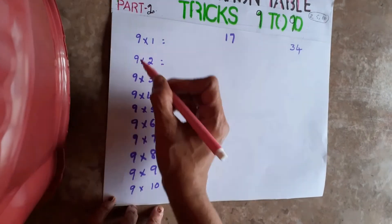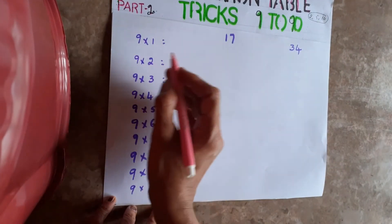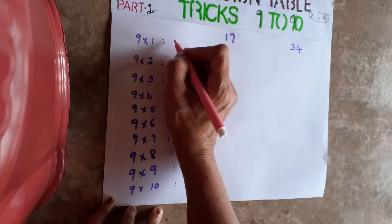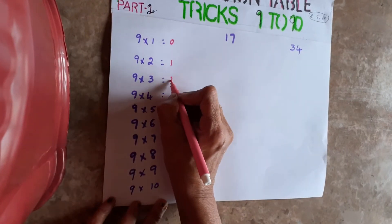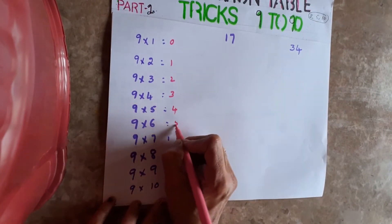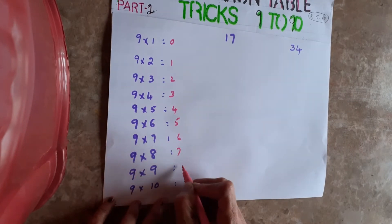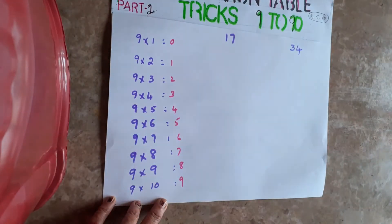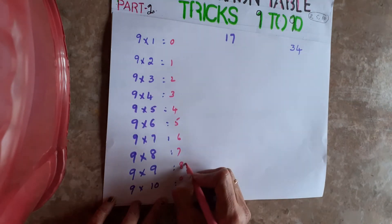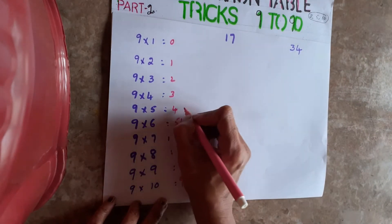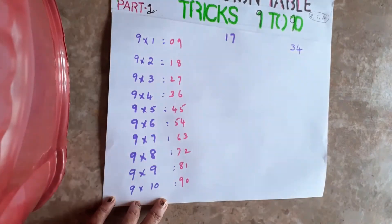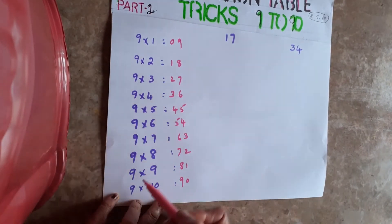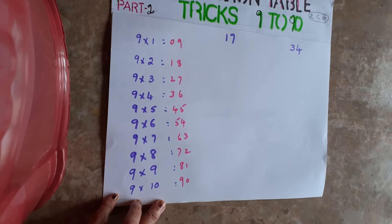I already explained the 9 table in my last video, but I'll tell you once again. Just write 0 to 9: 0 1 2 3 4 5 6 7 8 9, then write in reverse order starting from 0. You will get the 9 table: 9×1=9, 9×2=18, 9×3=27, 9×4=36, and so on. It is very easy and within seconds you can do this.